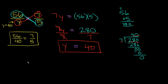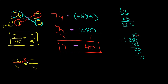Now let's do the other method. Rewriting: 56 over y equals 7 over 5. This time multiply straight across, starting from the completed fraction, which is 7 over 5. Ask: 7 times what equals 56? That's 7 times 8. If we multiply by 8 on top, we also multiply by 8 on the bottom: 5 times 8 equals 40. So y equals 40 — the same answer.